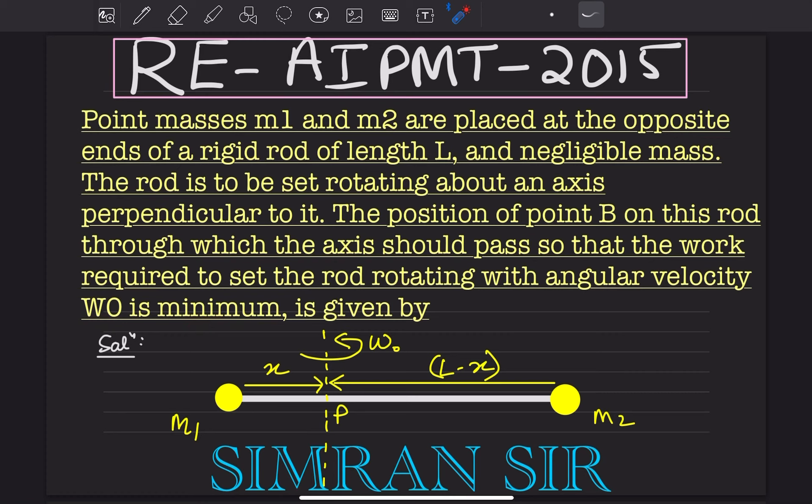The rod has length L with two masses M1 and M2 at its ends. The rod can rotate with angular velocity. The work required to set the rod rotating with angular velocity omega naught is to be minimum.